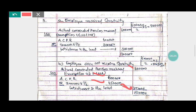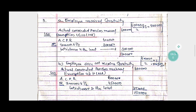So the exemption is four lakh fifty thousand out of six lakh, and therefore the taxable value is one lakh fifty thousand if he does not receive a gratuity.